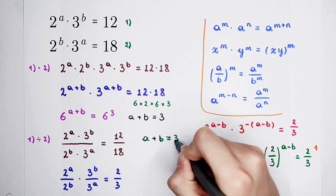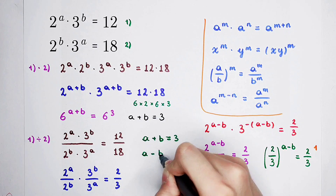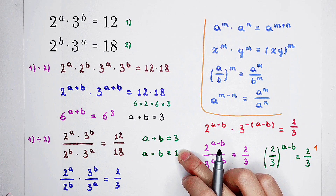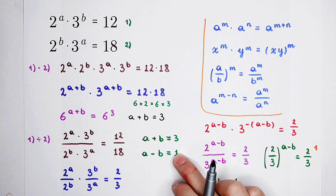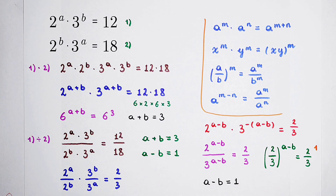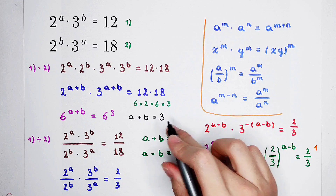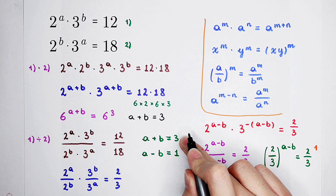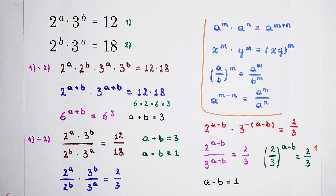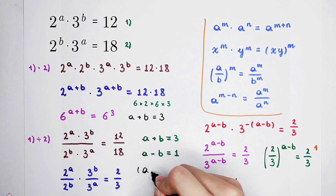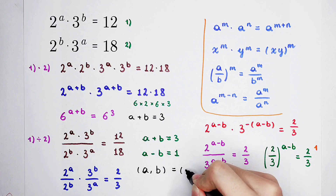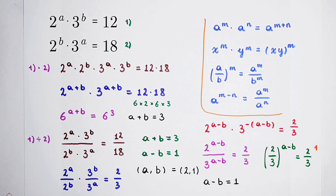So we have a plus b equals 3 and a minus b equals 1. If you add these two equations together, you get 2a equals 4, so a equals 2. If you subtract the second from the first, you get 2b equals 2, so b equals 1. The final answer: a equals 2, b equals 1.